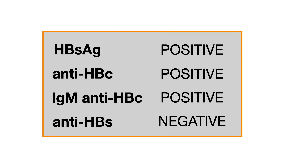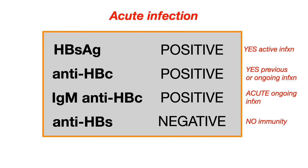What about this example? We've got a positive surface antigen, a positive core antibody, a positive IgM core antibody, and a negative surface antibody. This is just acute infection. The surface antigen is positive, which tells you there's active infection. The core antibody is positive, which tells you there's either a previous or ongoing infection — and that makes sense because the surface antigen is positive. You also have a positive core antibody IgM subtype, which tells you the infection is acute. Lastly, because the surface antibody is negative, there's no immunity. So the answer here is acute infection.